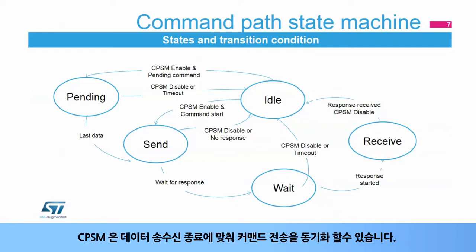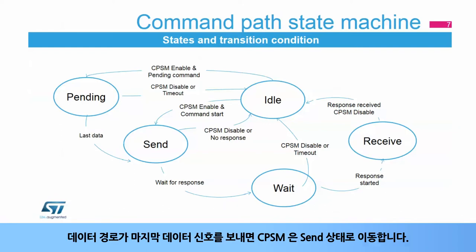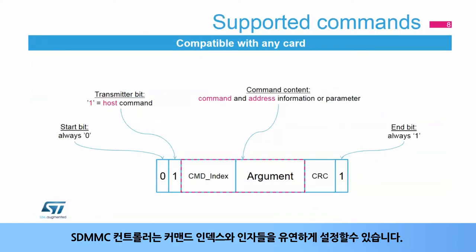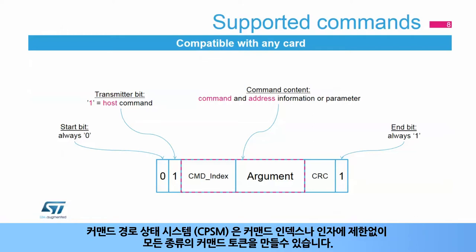The CPSM can be configured to send a command synchronized with the end of data transfer. When this feature is enabled, the CPSM moves to pending state and waits for the end of the MMC stream transfer. When the last data signal is triggered by the data path, the CPSM moves to send state. The SDMMC controller offers high flexibility for configuring command indexes and arguments, with a flexible 32-bit register for arguments and an independent 6-bit field for the command index. The command path state machine is able to generate all command tokens, with no restrictions on command index nor argument.